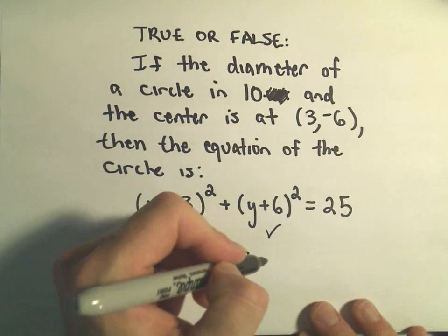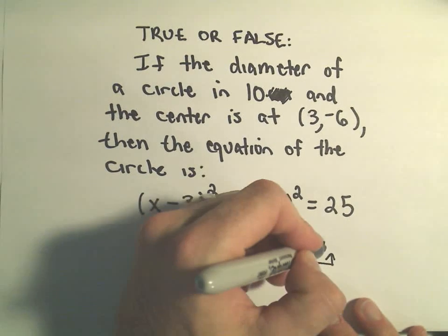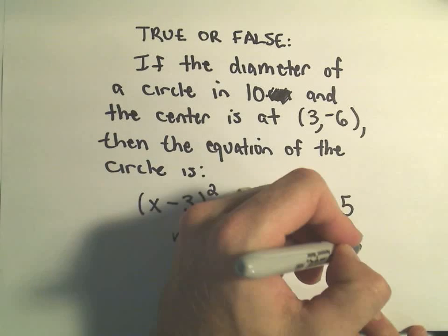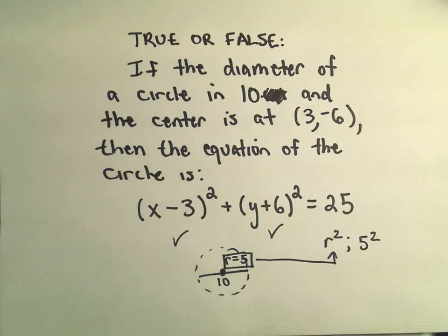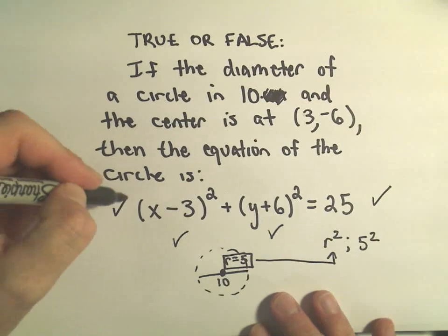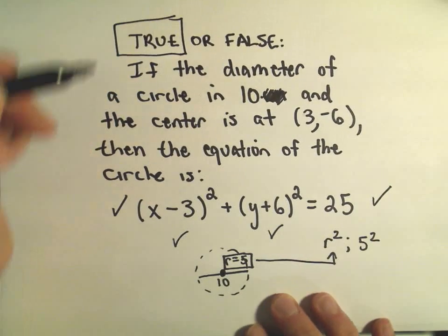And remember, we don't just plug the radius in, but we take the radius and we square it. And in this case, 5 squared would give us 25. So in fact, this is the correct equation. This is very much true.